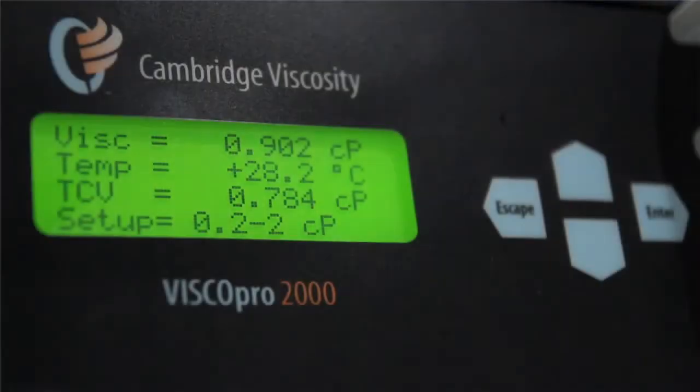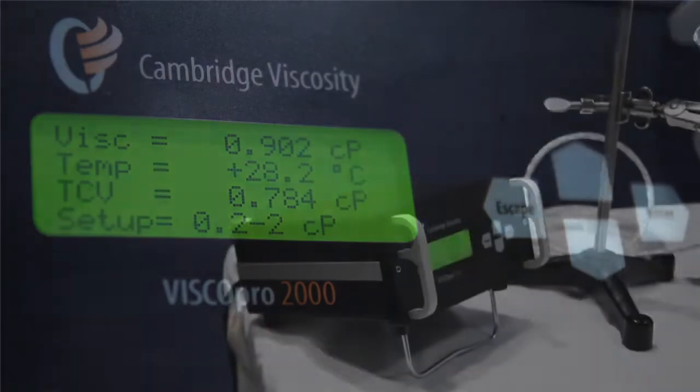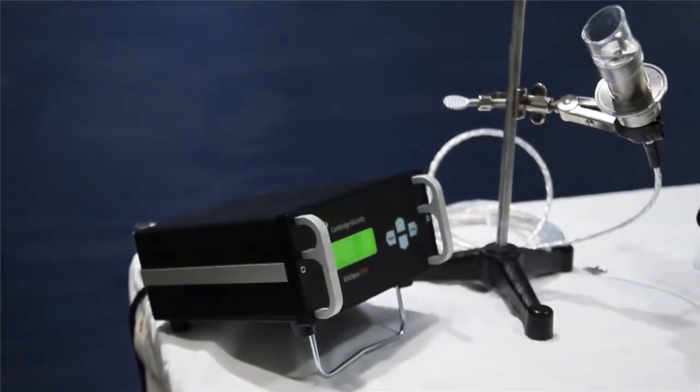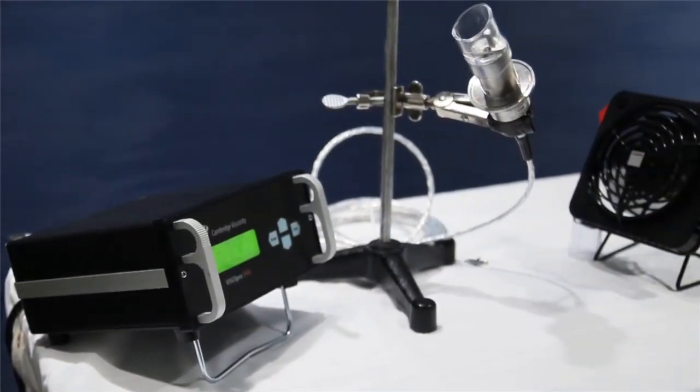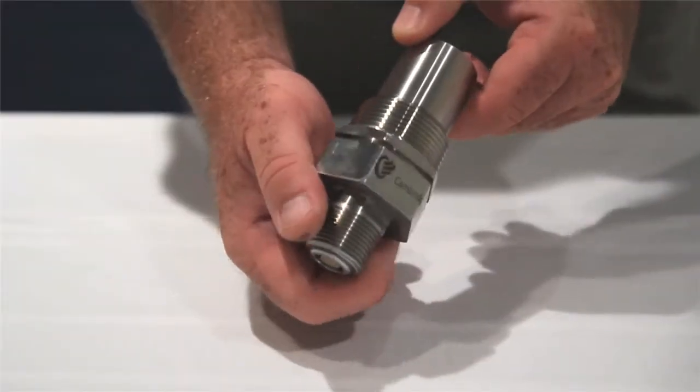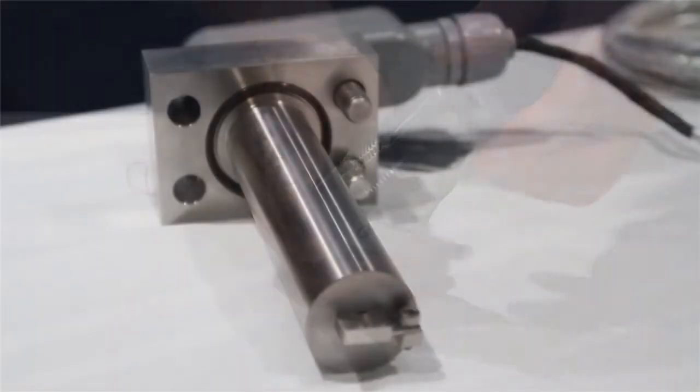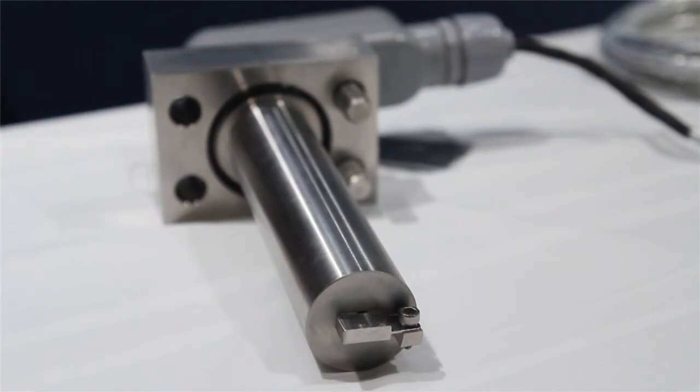You now know how to verify viscosity for a 300 series Cambridge sensor. This will verify that your viscometer is measuring viscosity correctly. This is for the majority of applications using Cambridge Process Sensors. Not all viscometers are the same. Please contact Cambridge Viscosities Service Department with any questions.